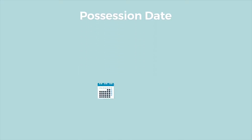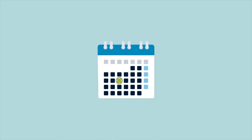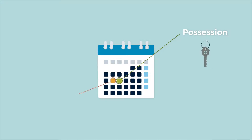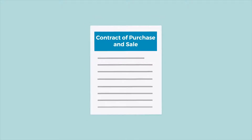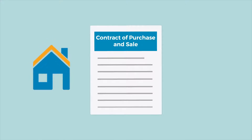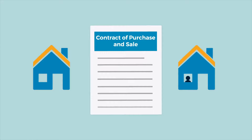Possession Date: the possession date is the date that the buyer is entitled to take possession of the property — when the buyer gets the keys and is allowed to move in. This date is often the day after the completion, but it can be any date agreed to by the buyer and the seller. The contract will specify the type of possession the buyer will get — for example, vacant possession, or if there are tenants in the property, the contract may specify that the tenants will remain.